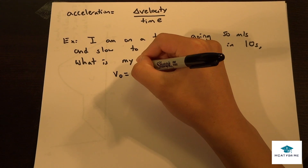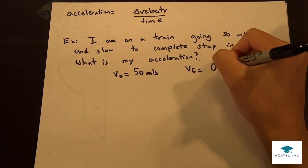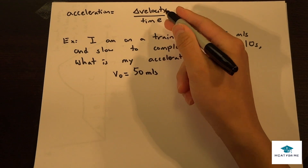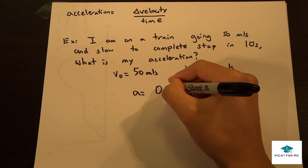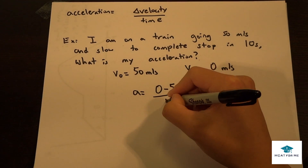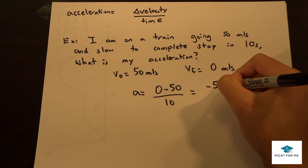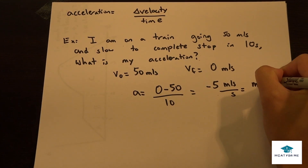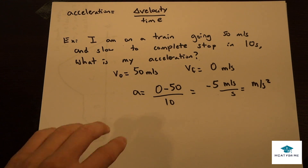Our initial speed is 50 and our final speed is 0 because we came to a complete stop. The equation is delta velocity over time. Delta velocity is always final minus initial, so that's 0 minus 50 over 10, which gives negative 5. The units are meters per second per second, or meters per second squared. So our acceleration is negative 5 meters per second squared.